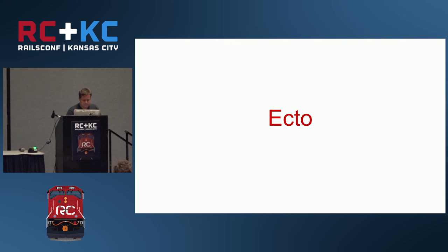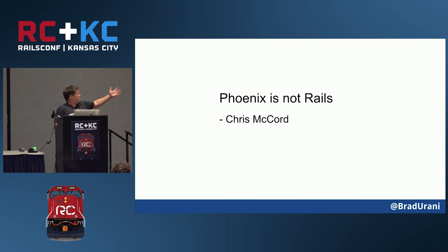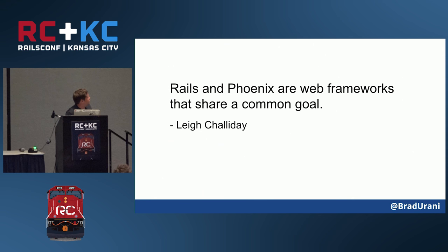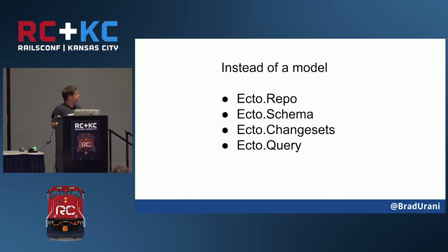Let's move on to Ecto now. Phoenix is not Rails, says Chris McCord. And they're web frameworks that share a common goal — very similar for CRUD apps, but Phoenix has the superpower of real-time communication. The way Ecto works is a little different: there's not just a simple model class. It actually has four things: a repo, a schema, a change set, and a query. So already it's conceptually a little more to think about.